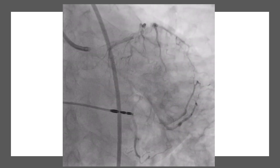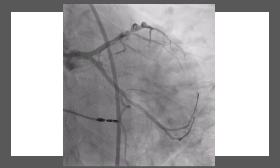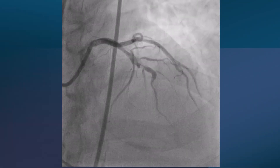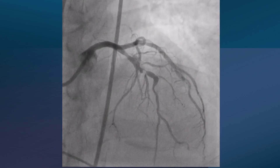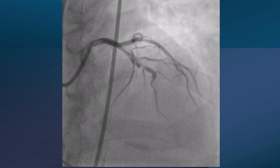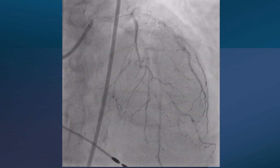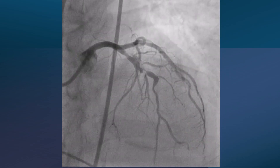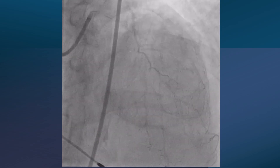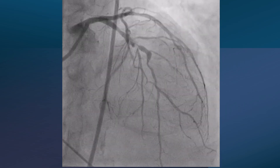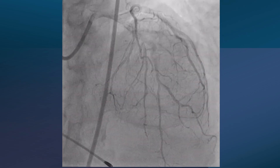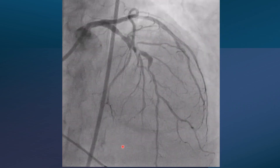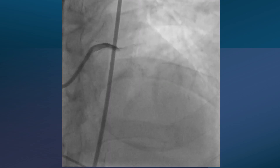This is the angiogram. The apicaudal view shows a calcified mid-LAD lesion. The apicranial view shows a calcified intermediate lesion at the proximal part, followed by a very tight lesion, then a bend in the LAD, then what appears to be a calcified nodule, then the LAD becomes a small caliber vessel. The large branch is either a split LAD or a large septal branch.